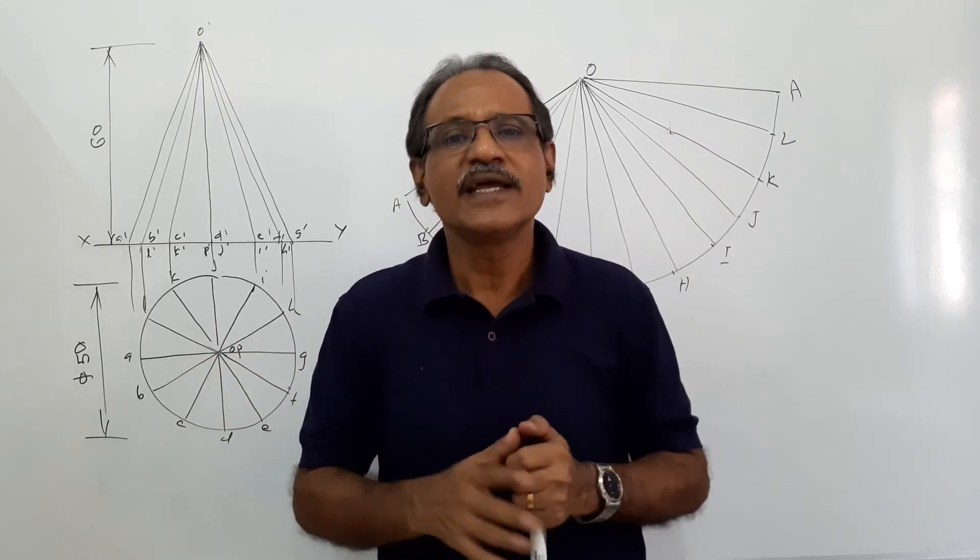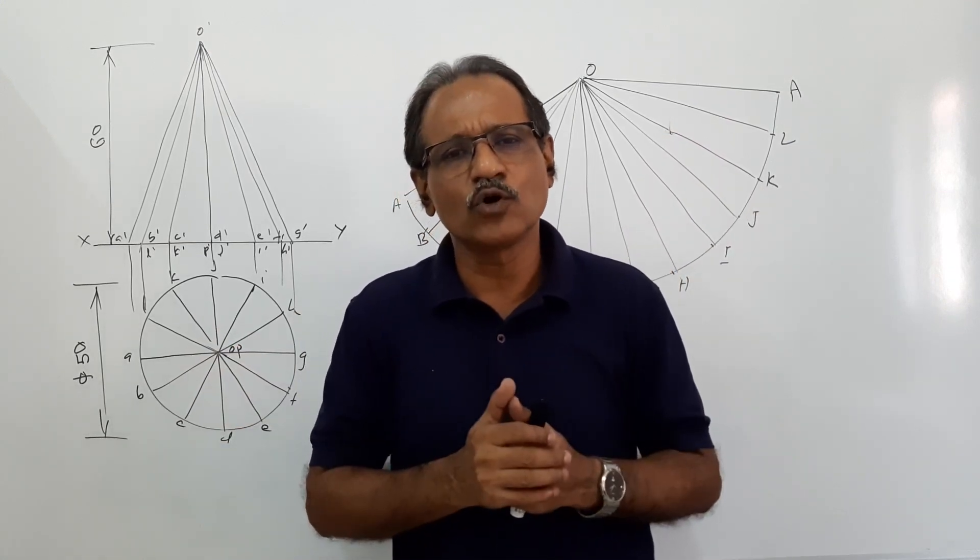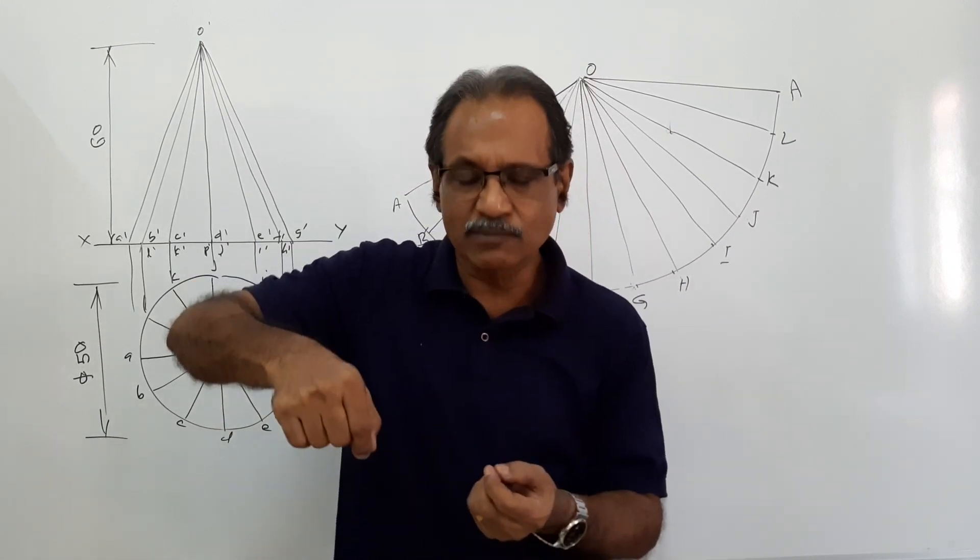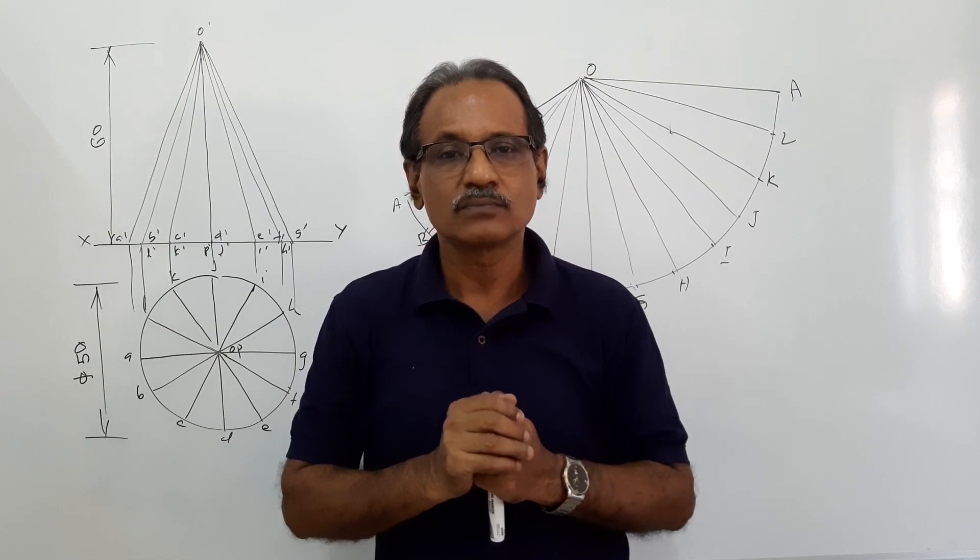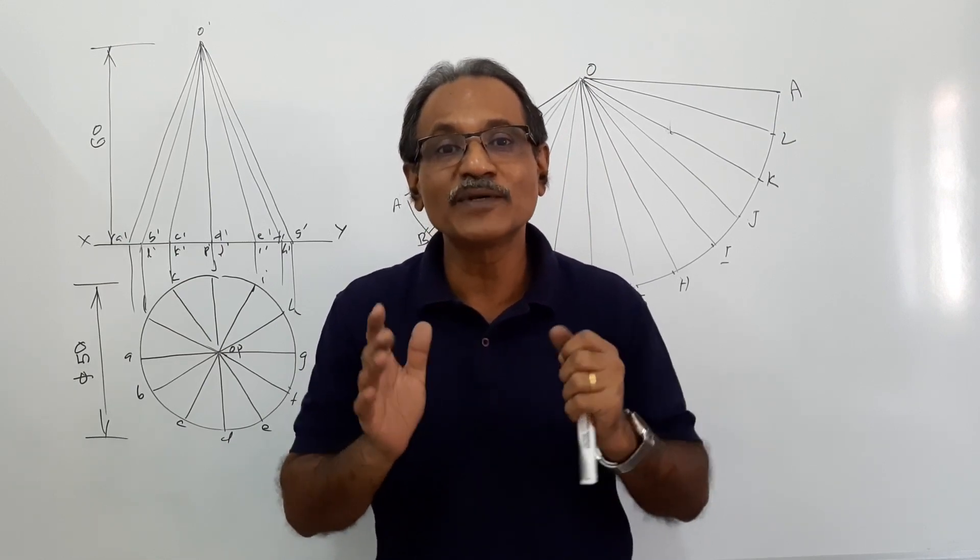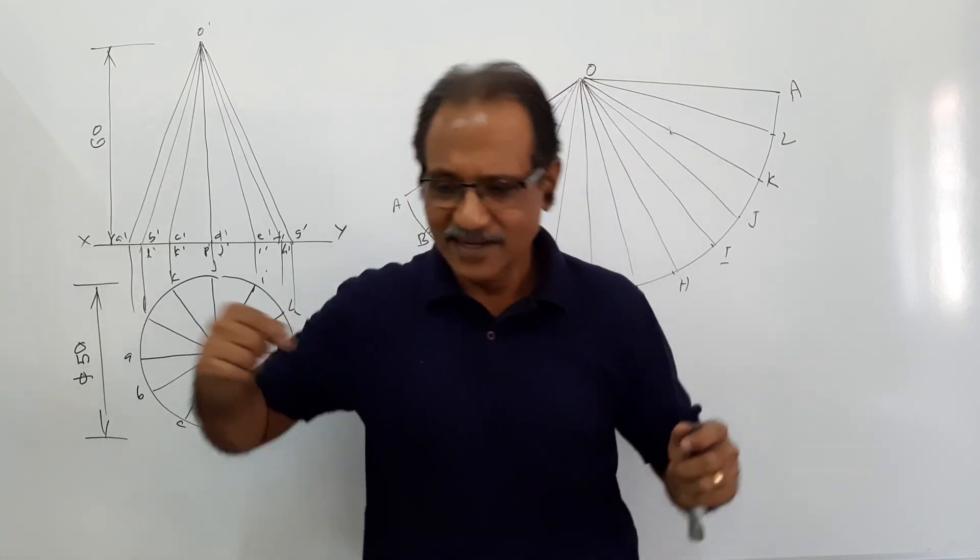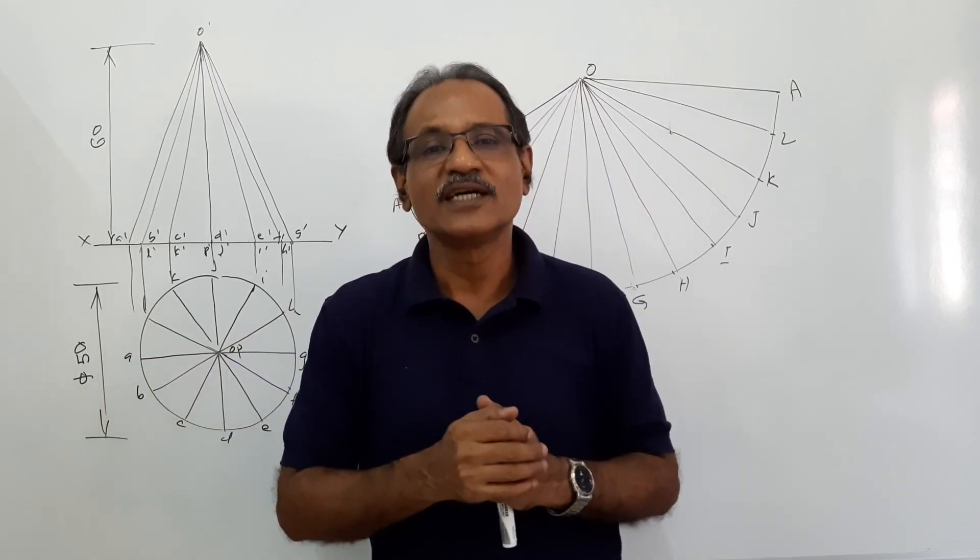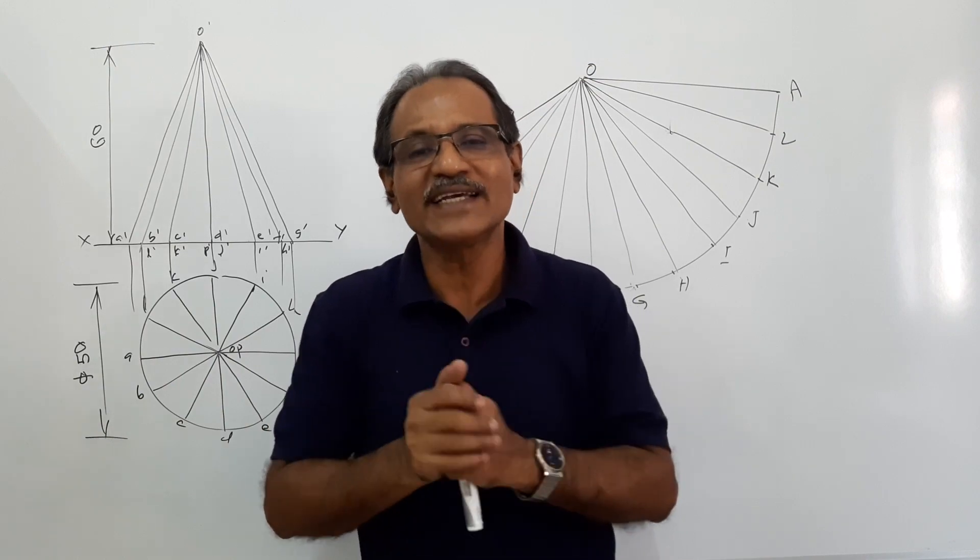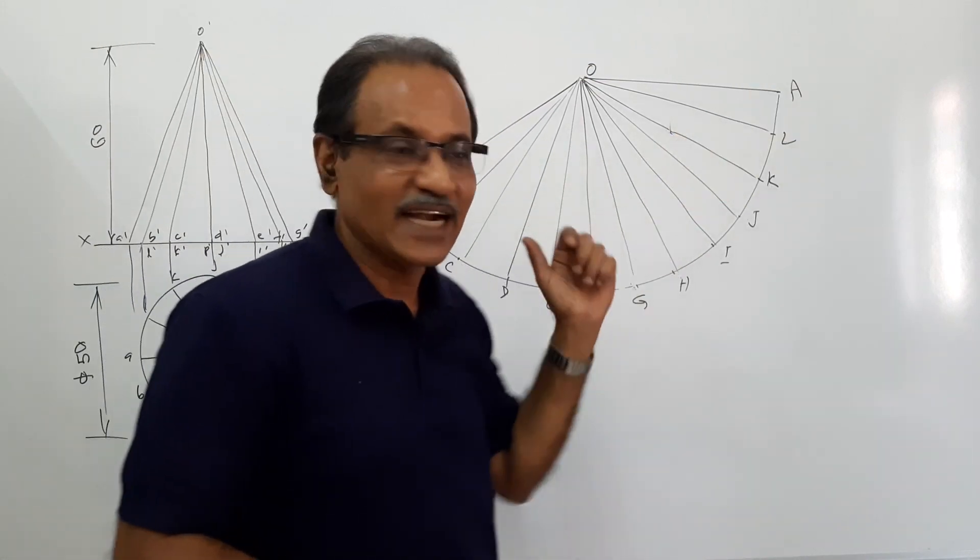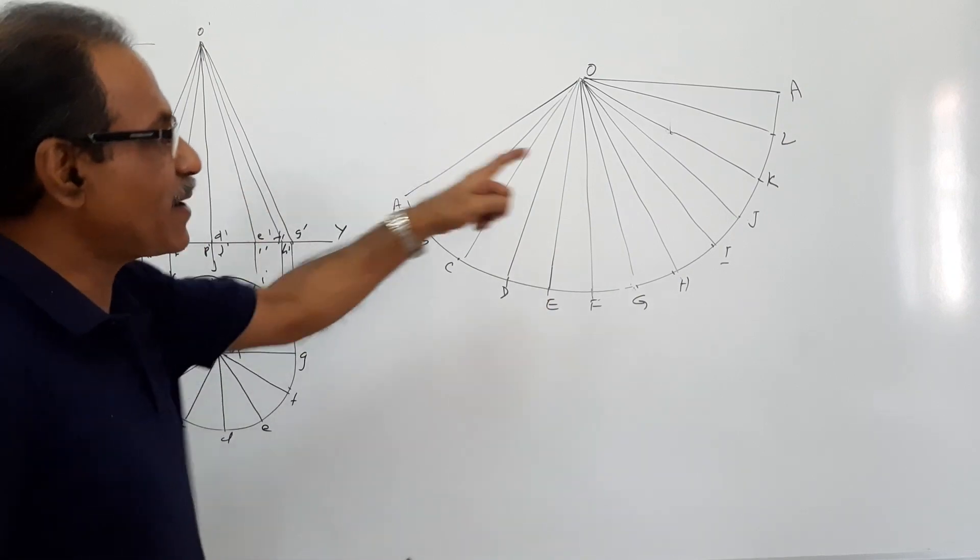Now let us think whichever way it can go. The cone is standing here. It can go around the base circle itself and comes back, will it be the shortest? No, it may not be the shortest. It can go anywhere and then come back, may not be shortest. So for it to be shortest, it has to travel from A to A, starting from A and coming back to A.